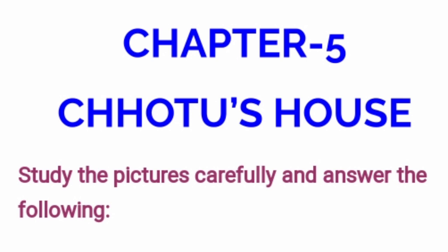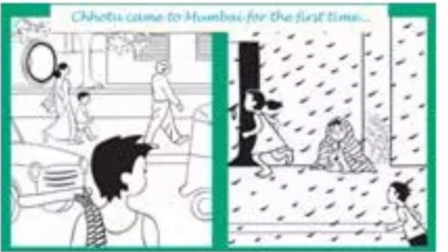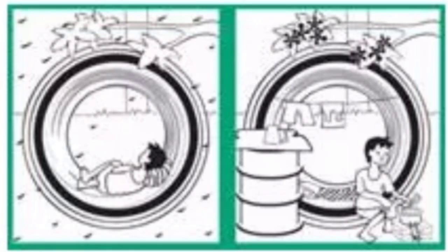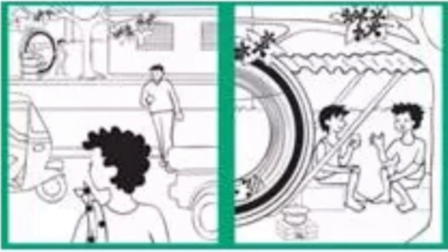Study the pictures carefully and answer the following questions. In the series of pictures, Chotu came to Mumbai for the first time. In the second picture, Chotu is getting wet in the rain. In the third picture, Chotu has used a pipe as shelter. In the fourth picture, he makes it his home. In the fifth picture, another boy came to Mumbai, and in the sixth picture, both are living together in the same pipe.